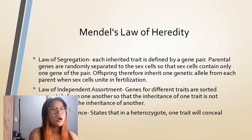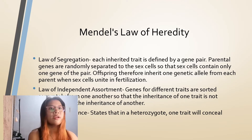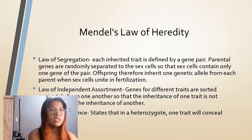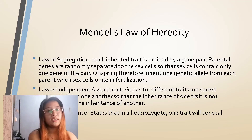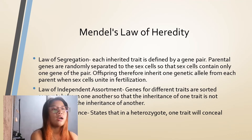Offspring therefore inherit one genetic allele from each parent when sex cells unite in fertilization. Law of independent assortment: genes for different traits are assorted separately from one another so that the inheritance of one trait is not dependent on the inheritance of another.